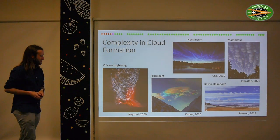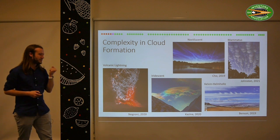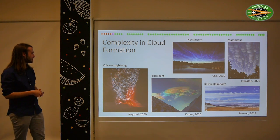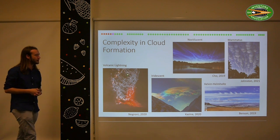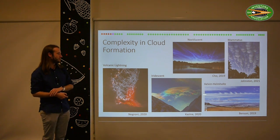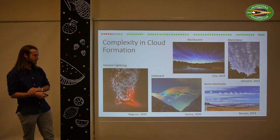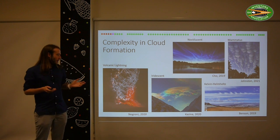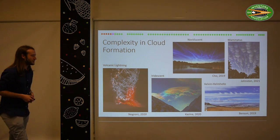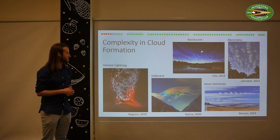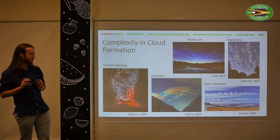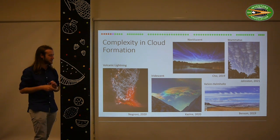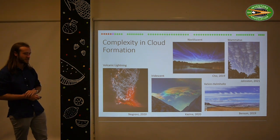Beyond the practical implications, clouds are actually just incredible — the amount of complexity in them is really cool. You can get processes like volcanic lightning through to instability-driven clouds like the Kelvin-Helmholtz style. There's interesting wave-type phenomena. It really goes to show that it is always worth looking up when you're outside. But the important thing is that they're actually very complicated, and that's why we need better sensors to capture that complexity in our models.